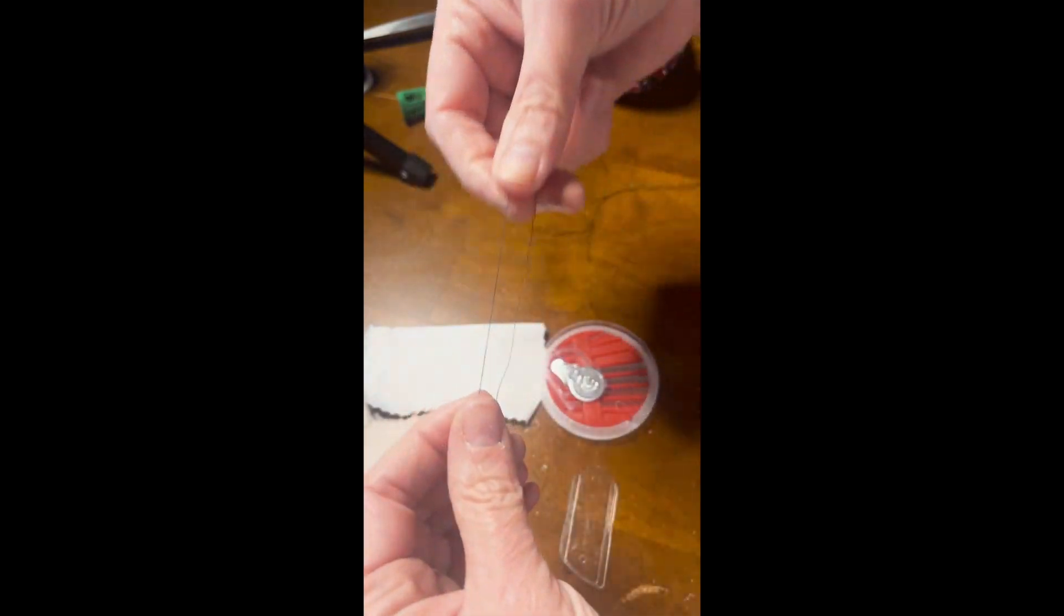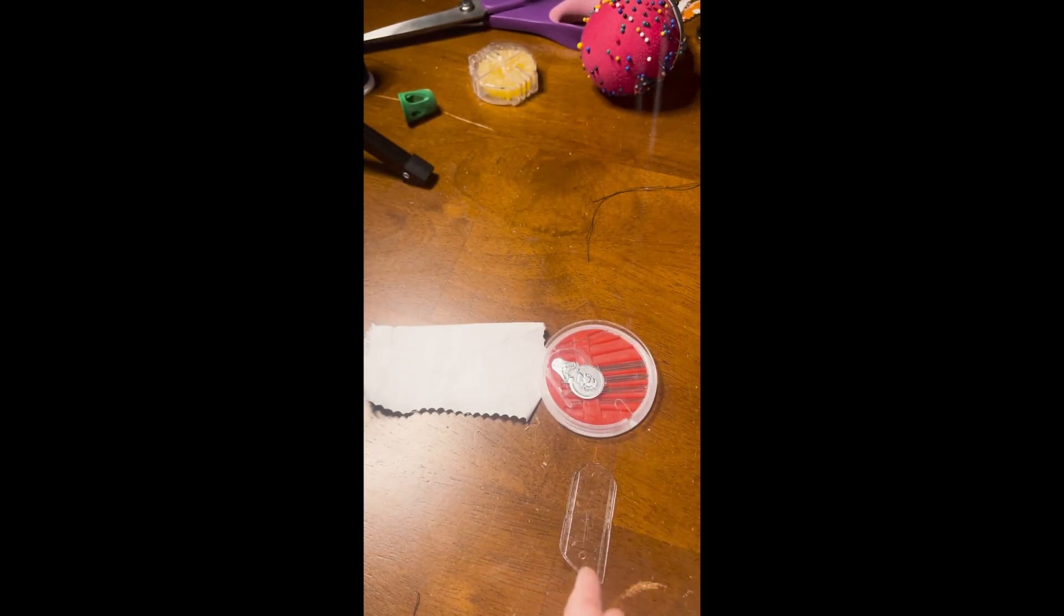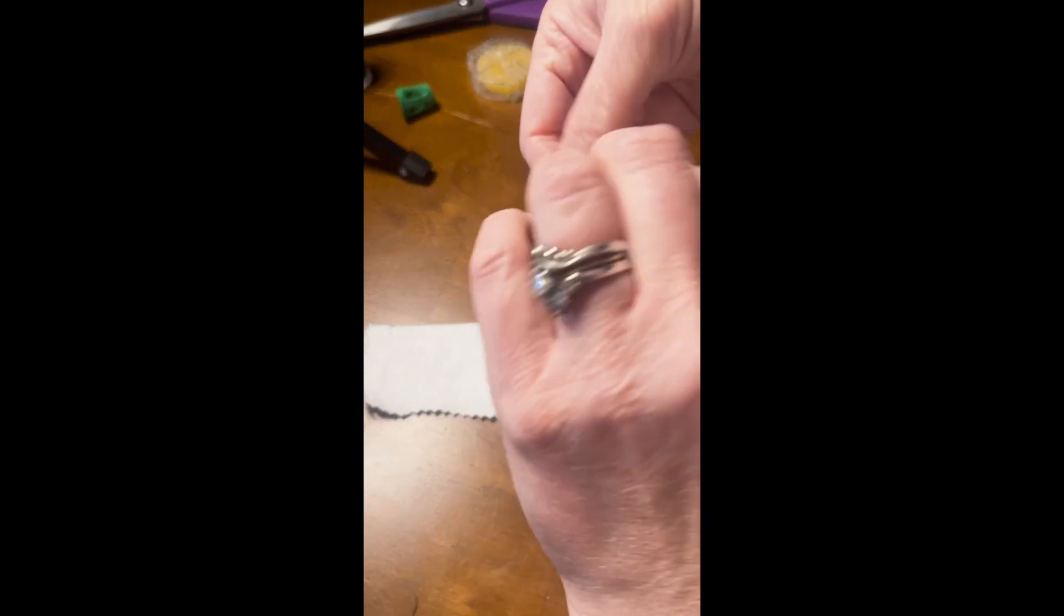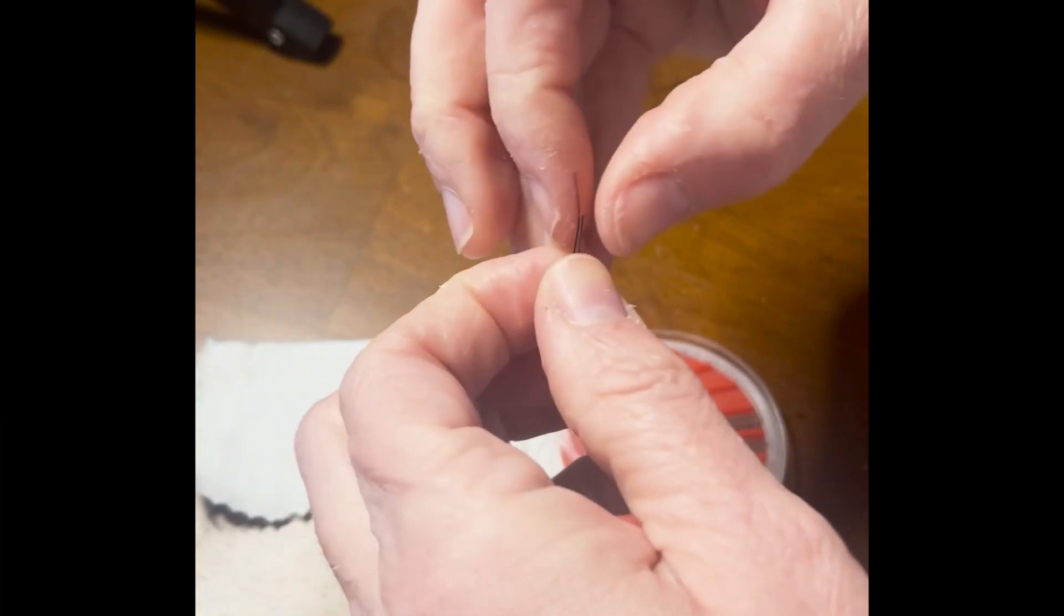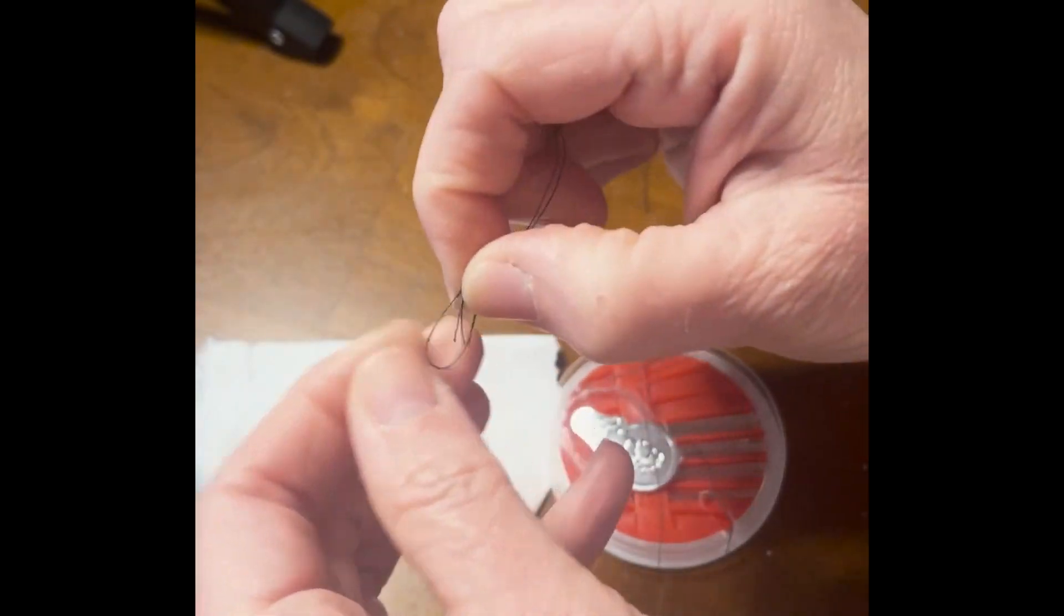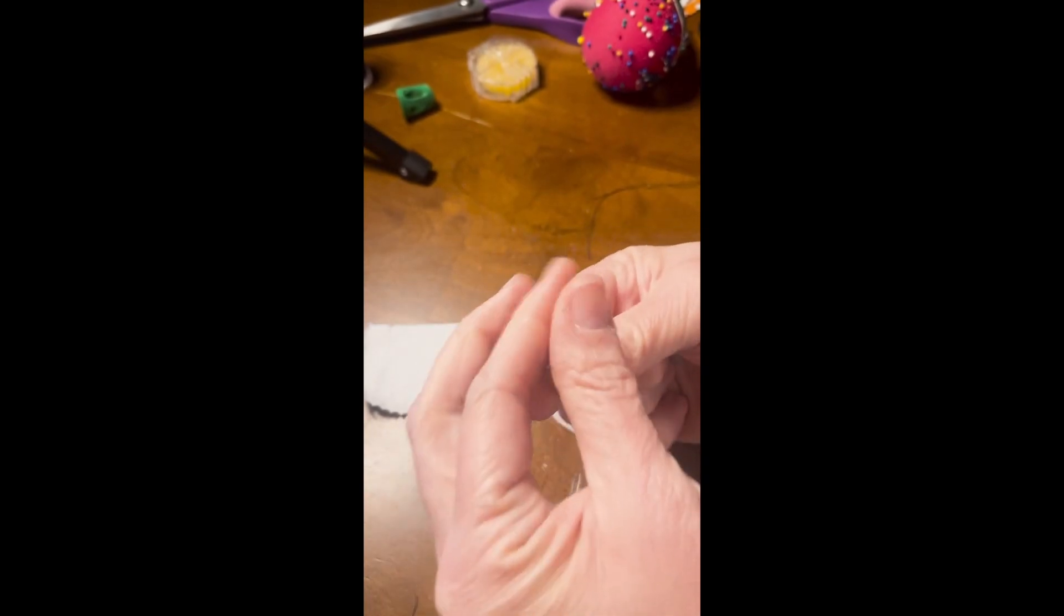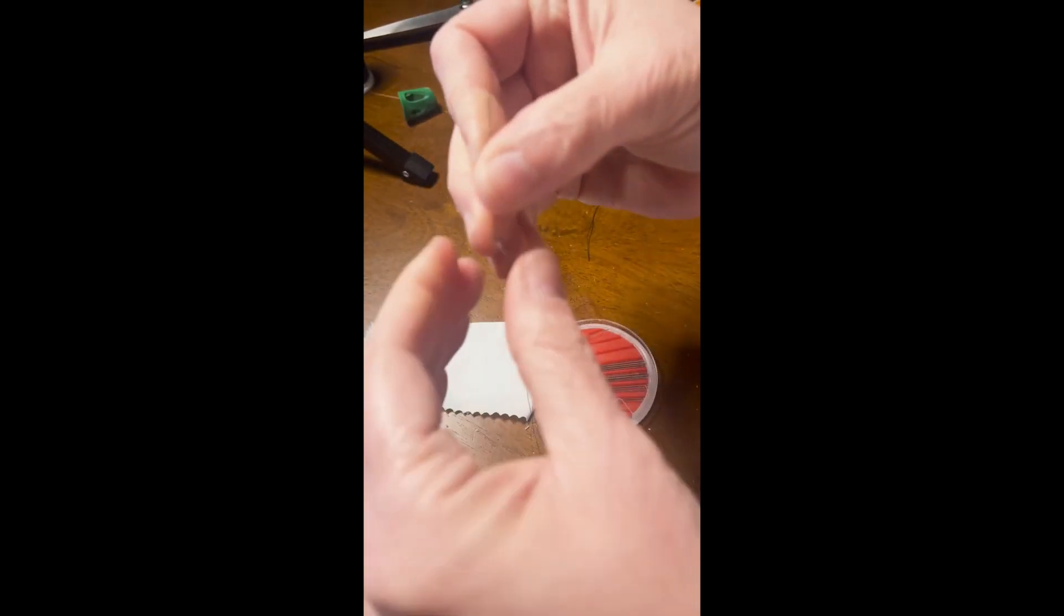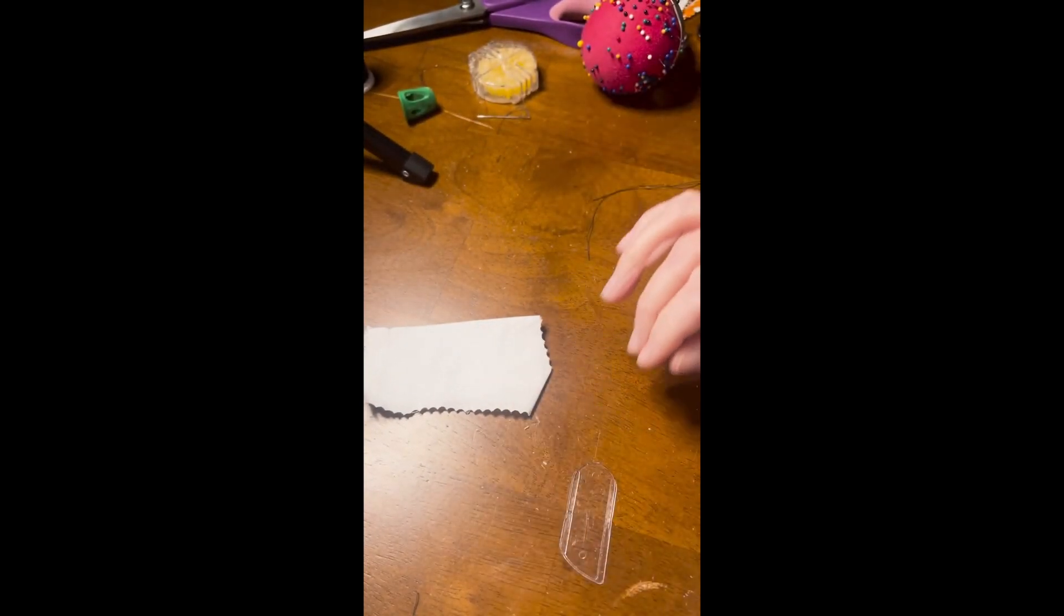Now you can knot your thread one of two ways. You can tie a knot in the end of your thread as such, or you can double knot it or however you want to knot it, and then you will be sewing with a double thread. I don't sew with a double thread, I sew with a single thread. So I will show you how to do that.